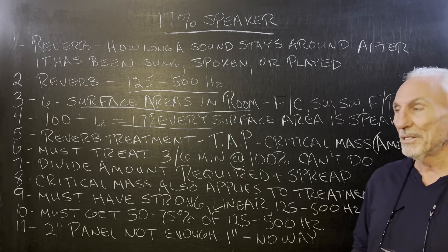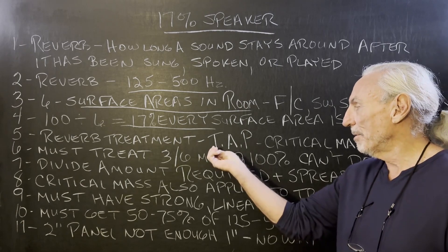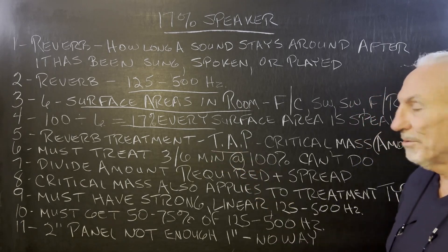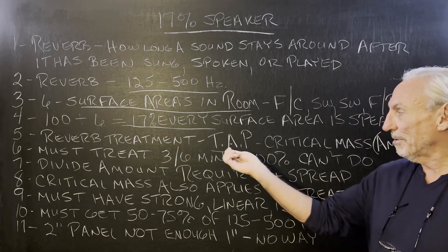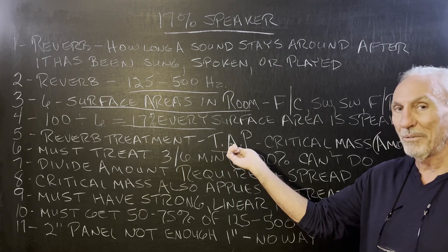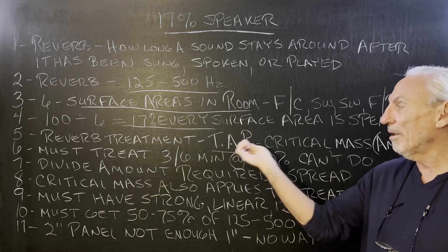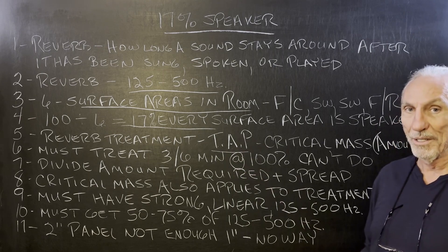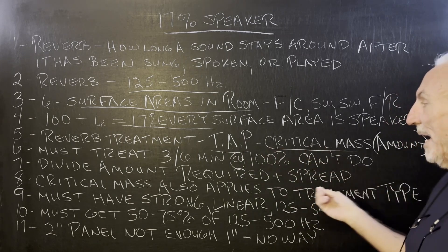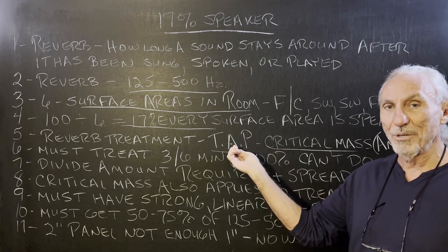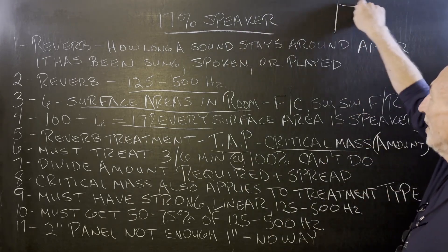Treating it is a completely different story. For reverb treatment, we have to follow specific steps: select the right treatment, get the right amount — all of them are critical. We call it critical mass, meaning you've got to have so much square footage of coverage. Let's take a wall.